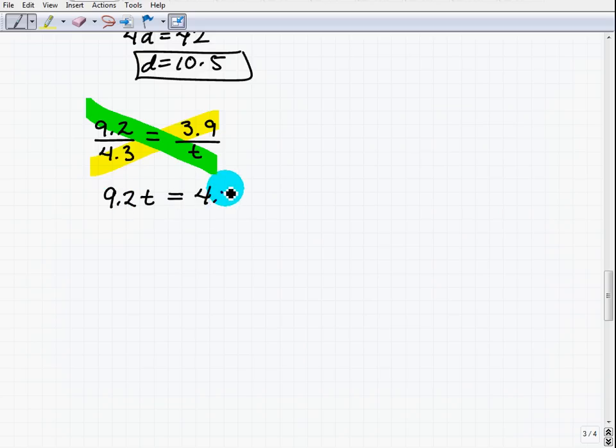equals 4.3 times 3.9. Let's get our calculators. 4.3 times 3.9, 16.9.